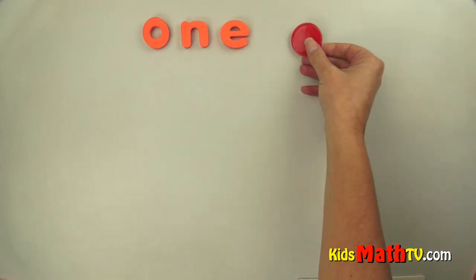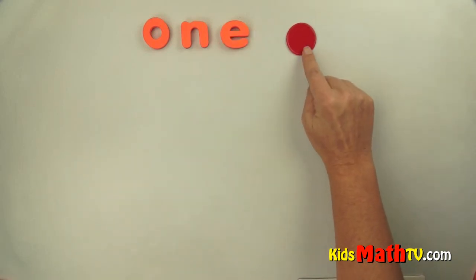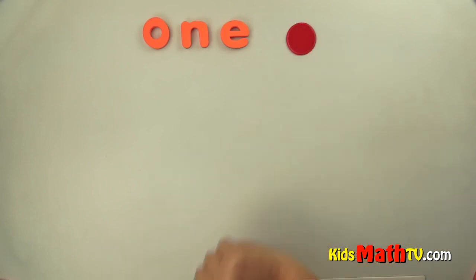One represents one item. This is one circle. One red circle.